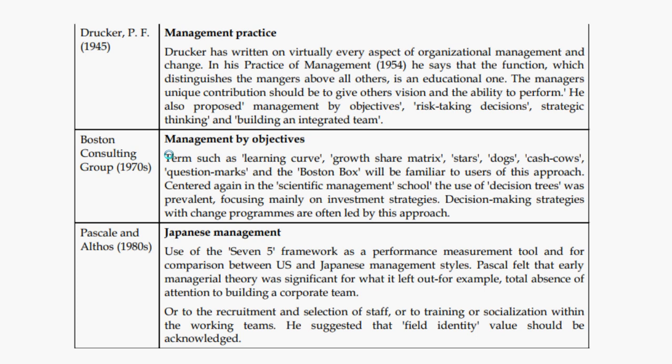The next school is Japanese management, proposed by Pascale and Athos, using the Seven-S framework, comparing US and Japanese management. Pascale felt that early managerial theory was significant for what it left out — for example, the total absence of attention to building a corporate team, or to recruitment and selection of staff, or to training and socialization within working teams. He suggested that field identity and values should be acknowledged, and that recruiting, training, and socializing staff is of great value.